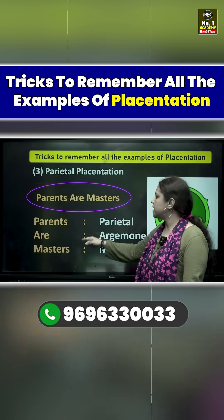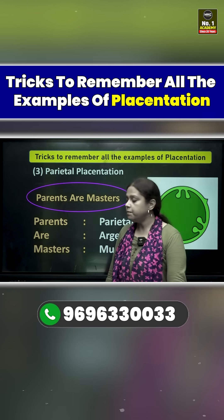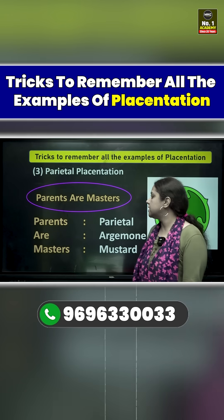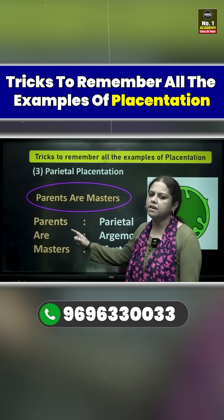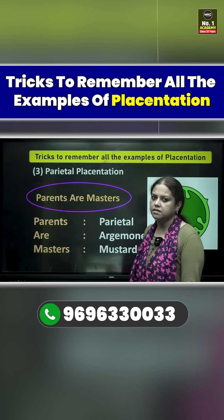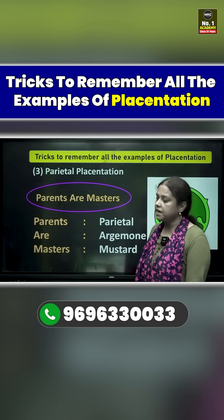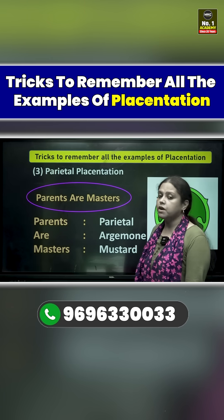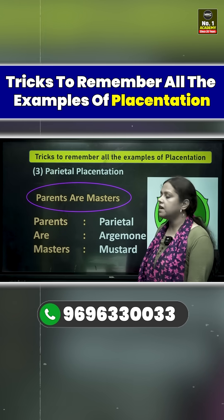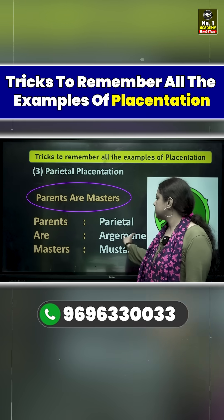Next is parietal placentation. The trick to learn the examples of parietal placentation is: 'Parents are Masters.' Parent's P is for Parietal, A is for Argemone, and Master's M will remind you of Mustard.